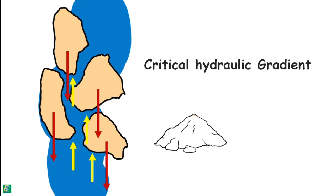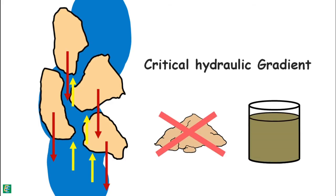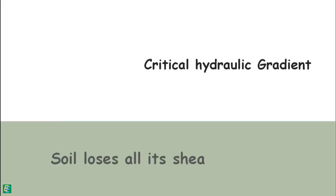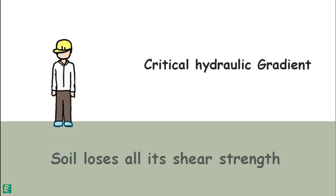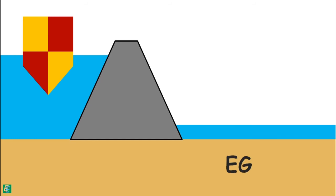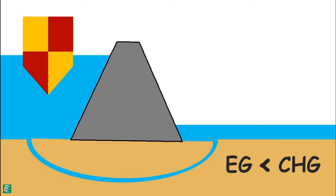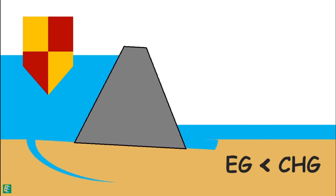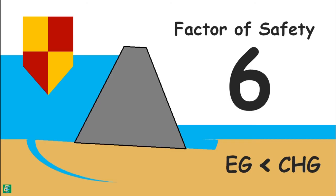Soil in such a state does not behave like soil anymore but behaves like a viscous liquid — it loses all its shear strength and is no longer able to support any load. For the safety of the structure, the exit gradient must be kept well below the critical hydraulic gradient. This piping phenomenon can lead to whole structure failure, and for safety against piping, a factor of safety of at least six is recommended.